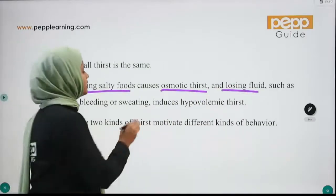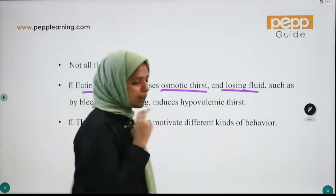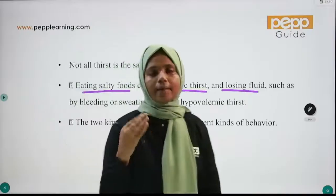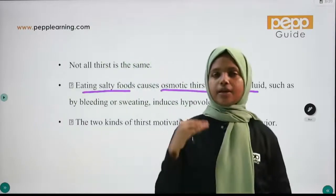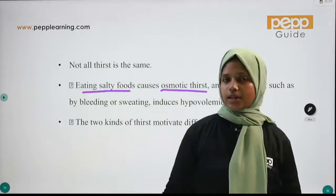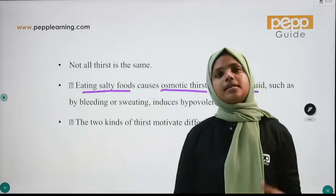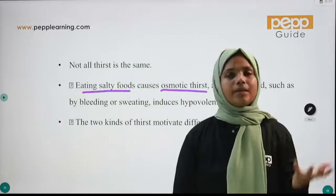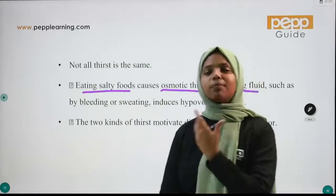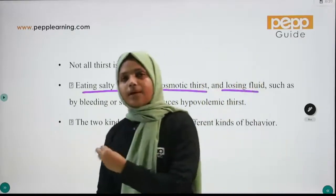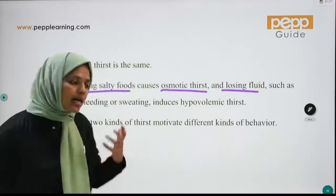Osmotic thirst is triggered when we need to restore fluid balance. Hypovolemic thirst is triggered by events like vomiting, bleeding, or sweating — any loss of body fluid volume.